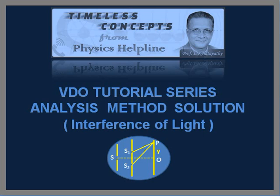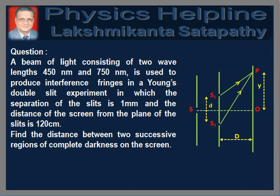In this video tutorial, we will discuss a problem on the interference of light waves. The question is as follows. A beam of light consisting of two wavelengths, 450 nm and 750 nm, is used to produce interference fringes in a Young's double slit experiment in which the separation of the slits is 1 mm and the distance of the screen from the plane of the slits is 120 cm. Find the distance between two successive regions of complete darkness on the screen.